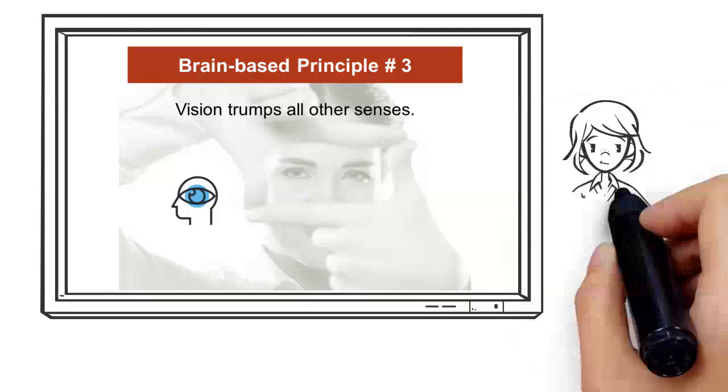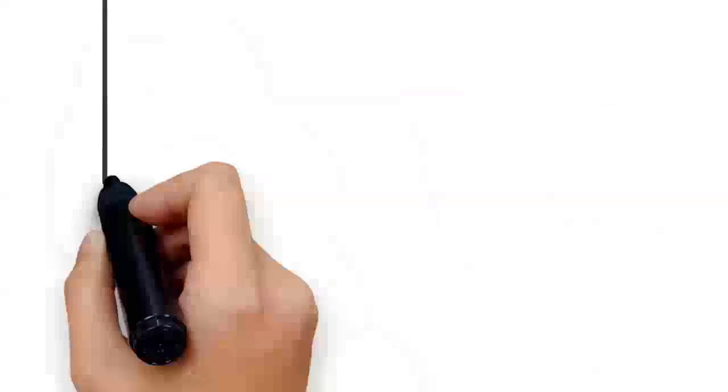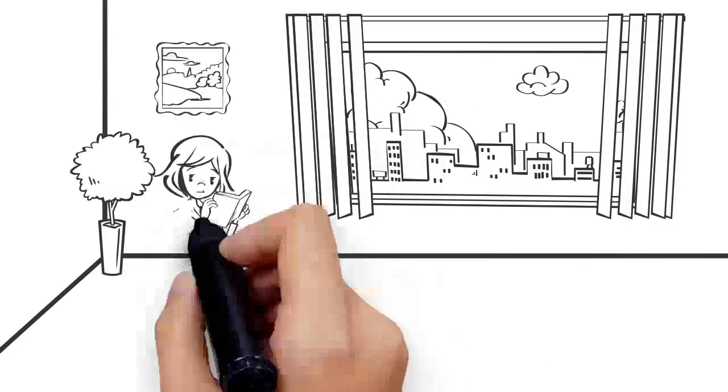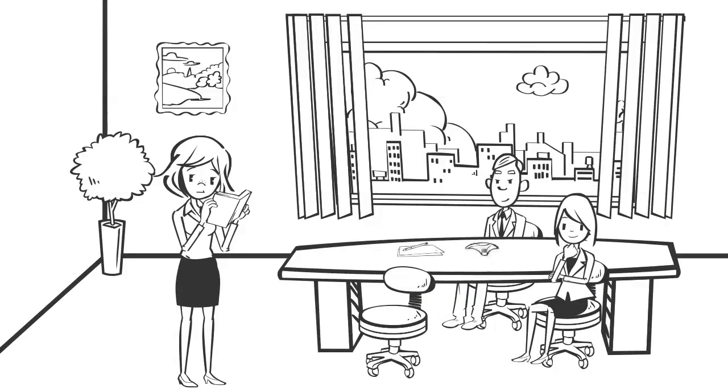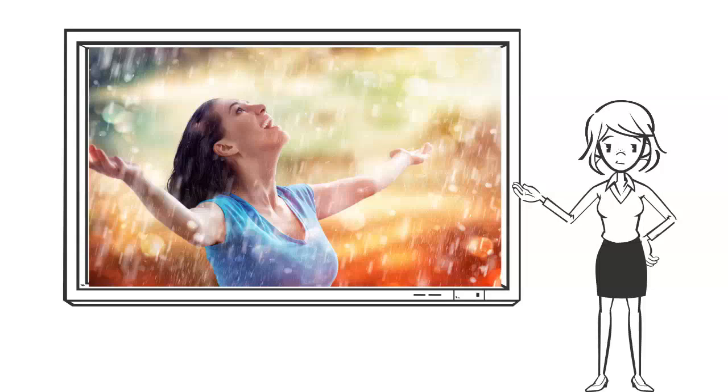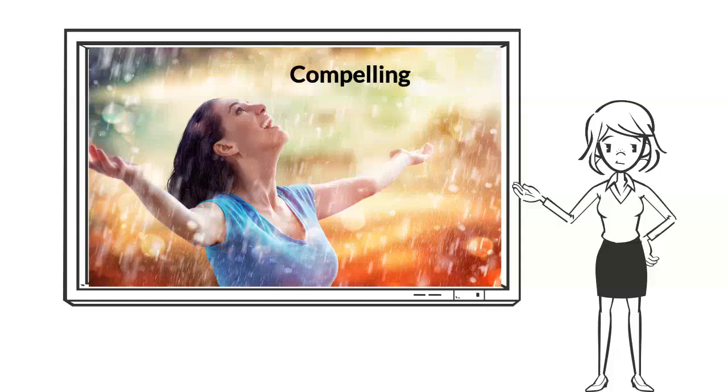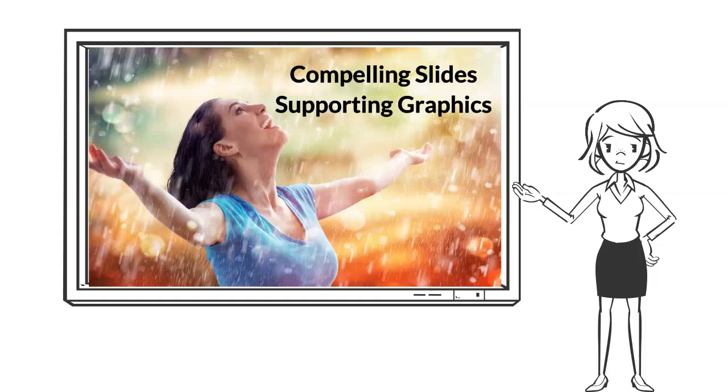Vision trumps all other senses. This is a principle from John Medina's fascinating book, Brain Rules. In the virtual classroom, you must communicate memorable visual messages. That means your slides need to be compelling, your graphics need to support your message, and you need to cut back on the amount of text on each slide.